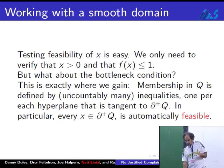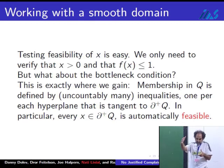Q now is something smooth. You want to be... It's a smooth domain defined by X positive and F of X less than or equal to one. How do you define geometrically a convex smooth domain? You take all the tangent planes. There are uncountably many of them. And you say, I have to be below that hyperplane.